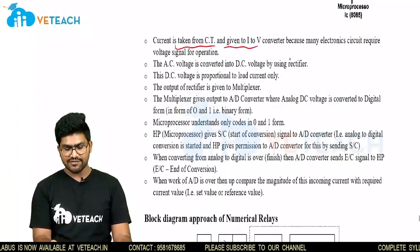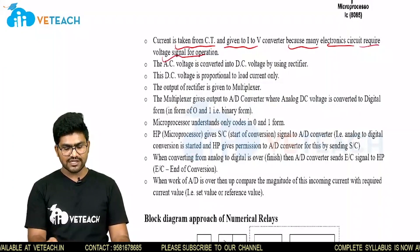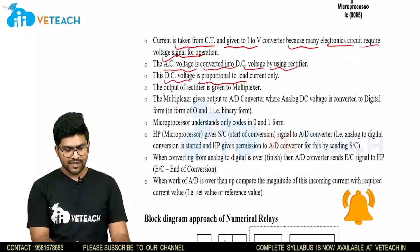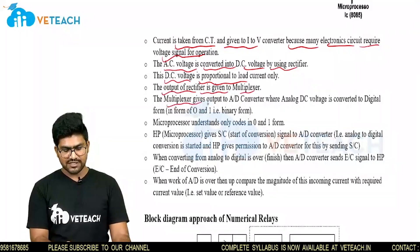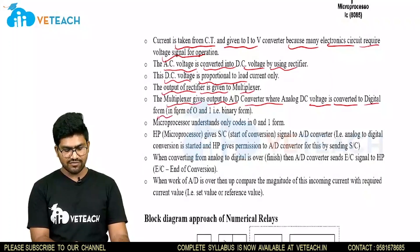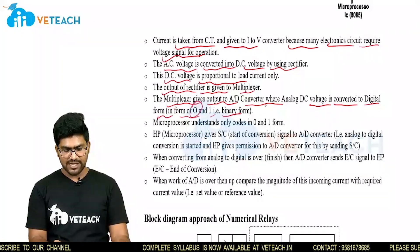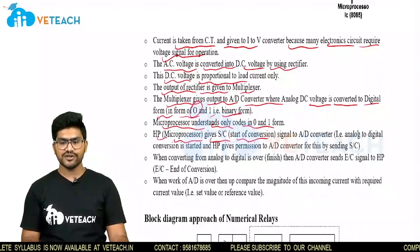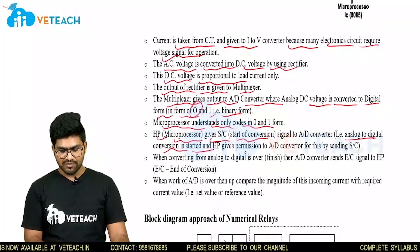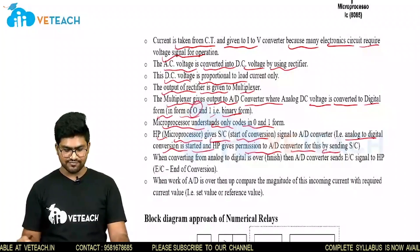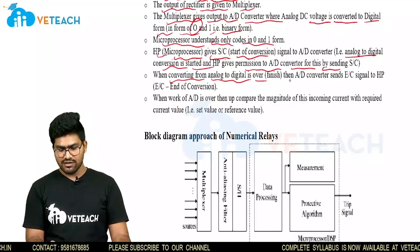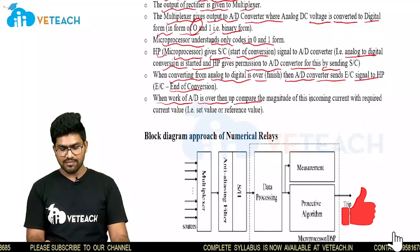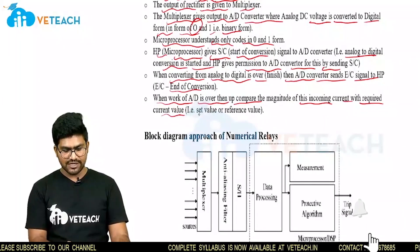Current is taken from the CT and given to the I to V converter because many electronic circuits require voltage signals for operation. The AC voltage is converted into DC voltage by using a rectifier. This DC voltage is proportional to the load current only. The output of the rectifier is given to a multiplexer. The multiplexer gives output to the A to D converter, where analog DC voltage is converted to digital form — that is, binary form of 0 and 1. The microprocessor understands only codes 0 and 1. The microprocessor gives S by C, start of conversion signal, to the A to D converter to begin analog to digital conversion. When conversion is over, the A to D converter sends E by C, end of conversion, signal to the microprocessor. When the work of the ADC is over, the microprocessor compares the magnitude of the incoming current with the required set value or reference value.